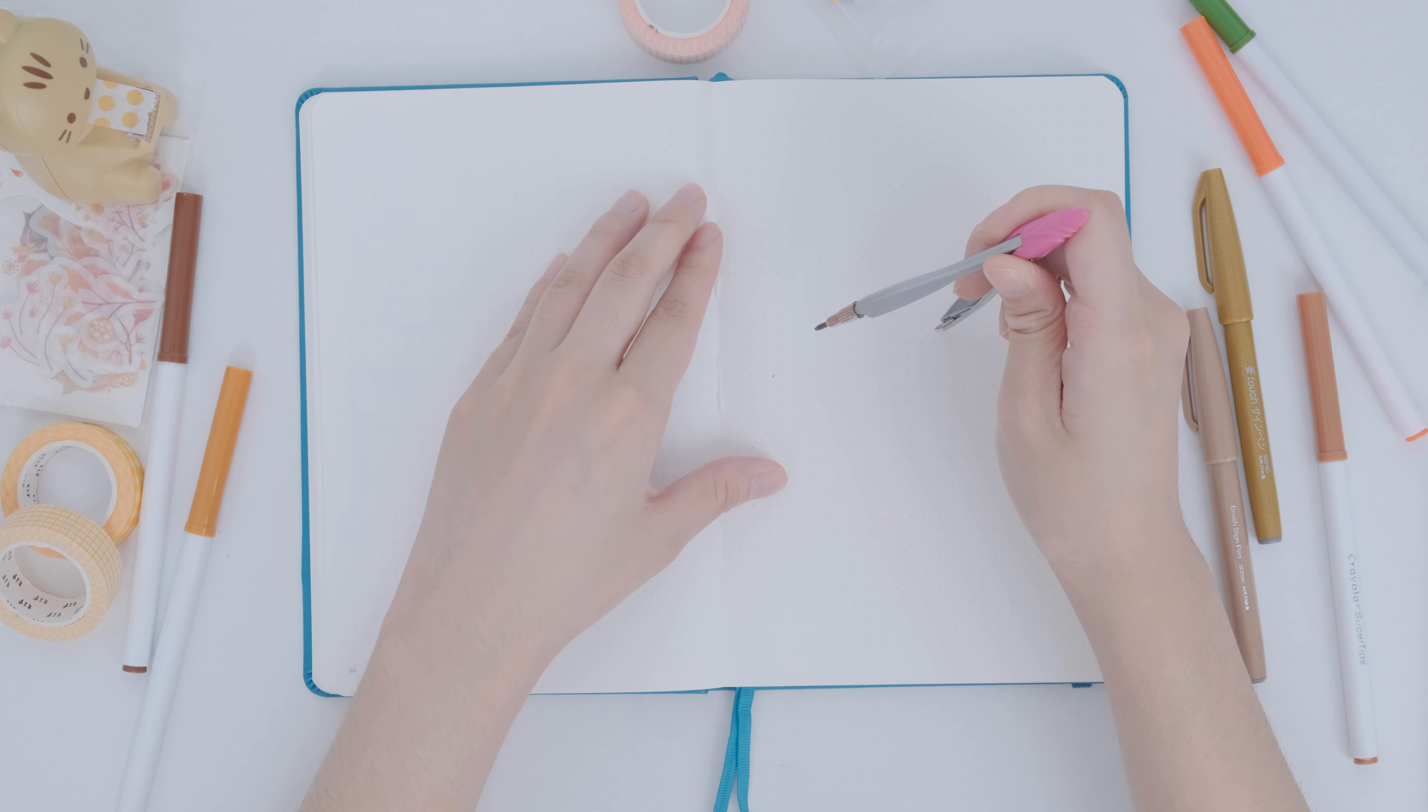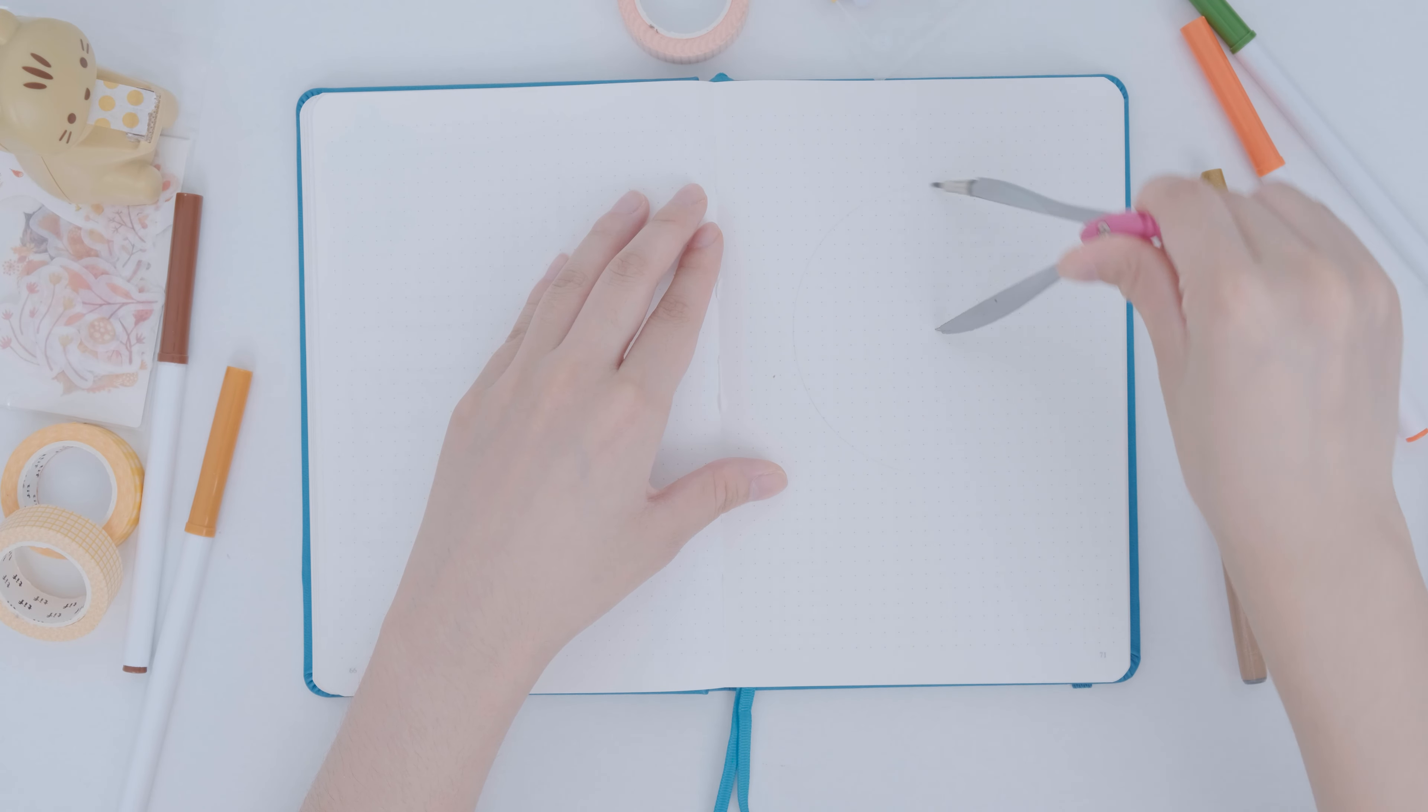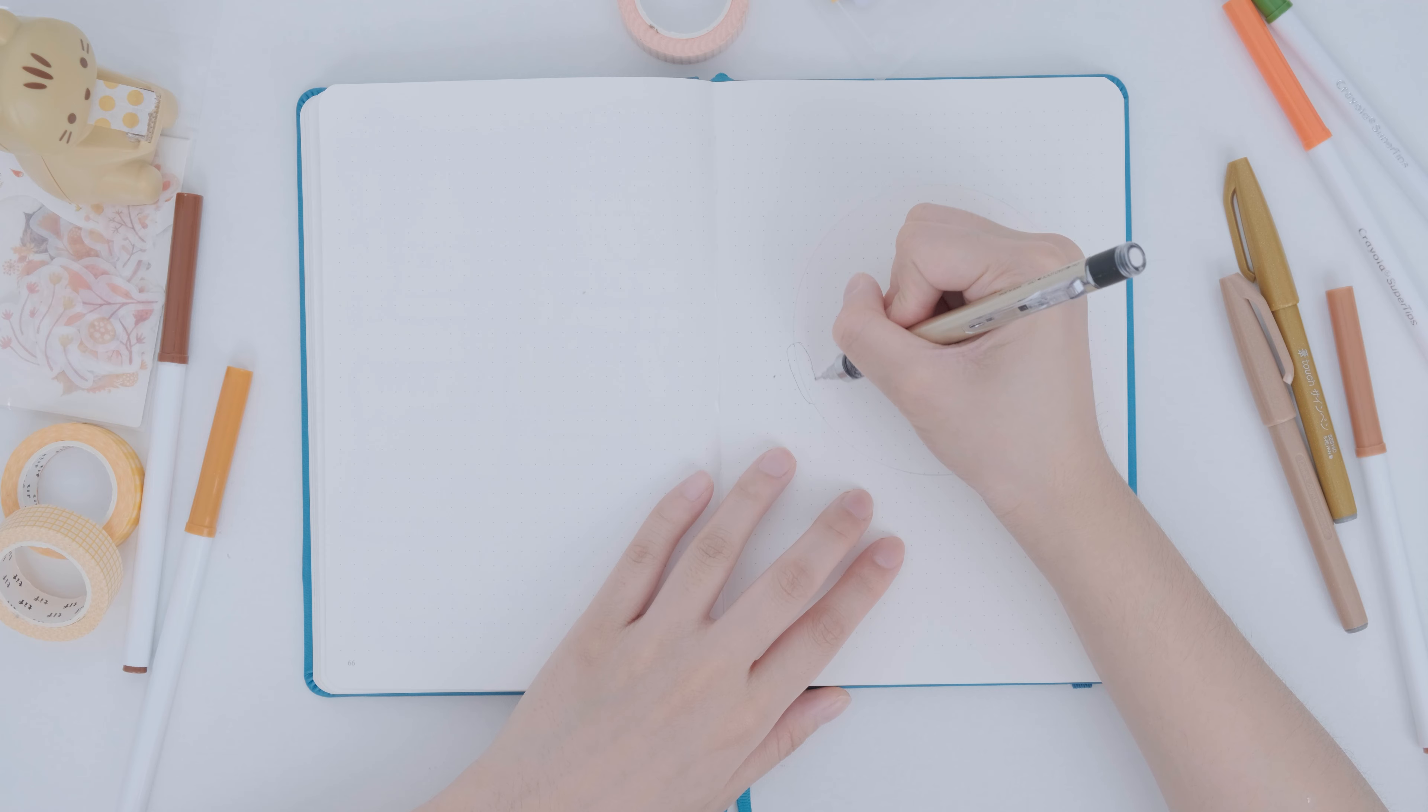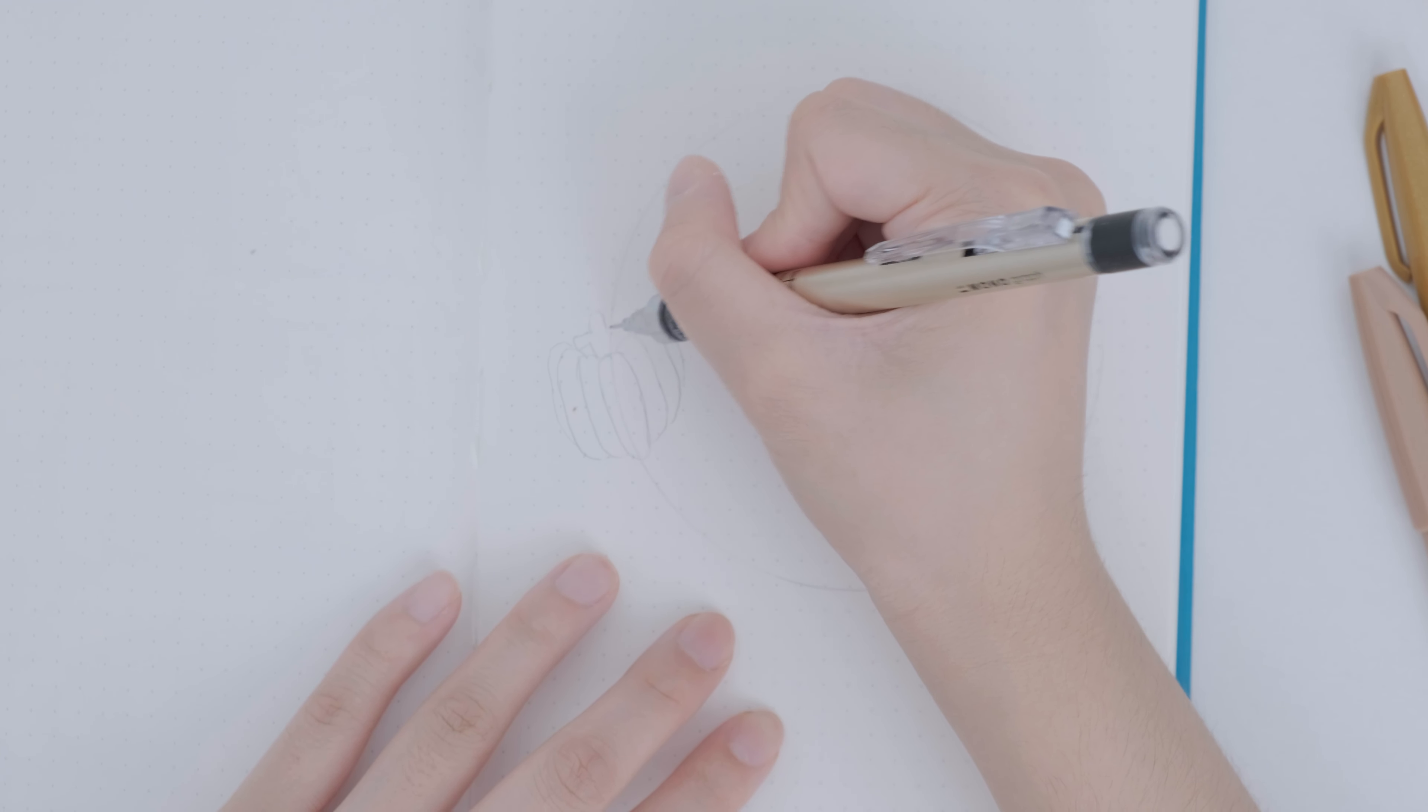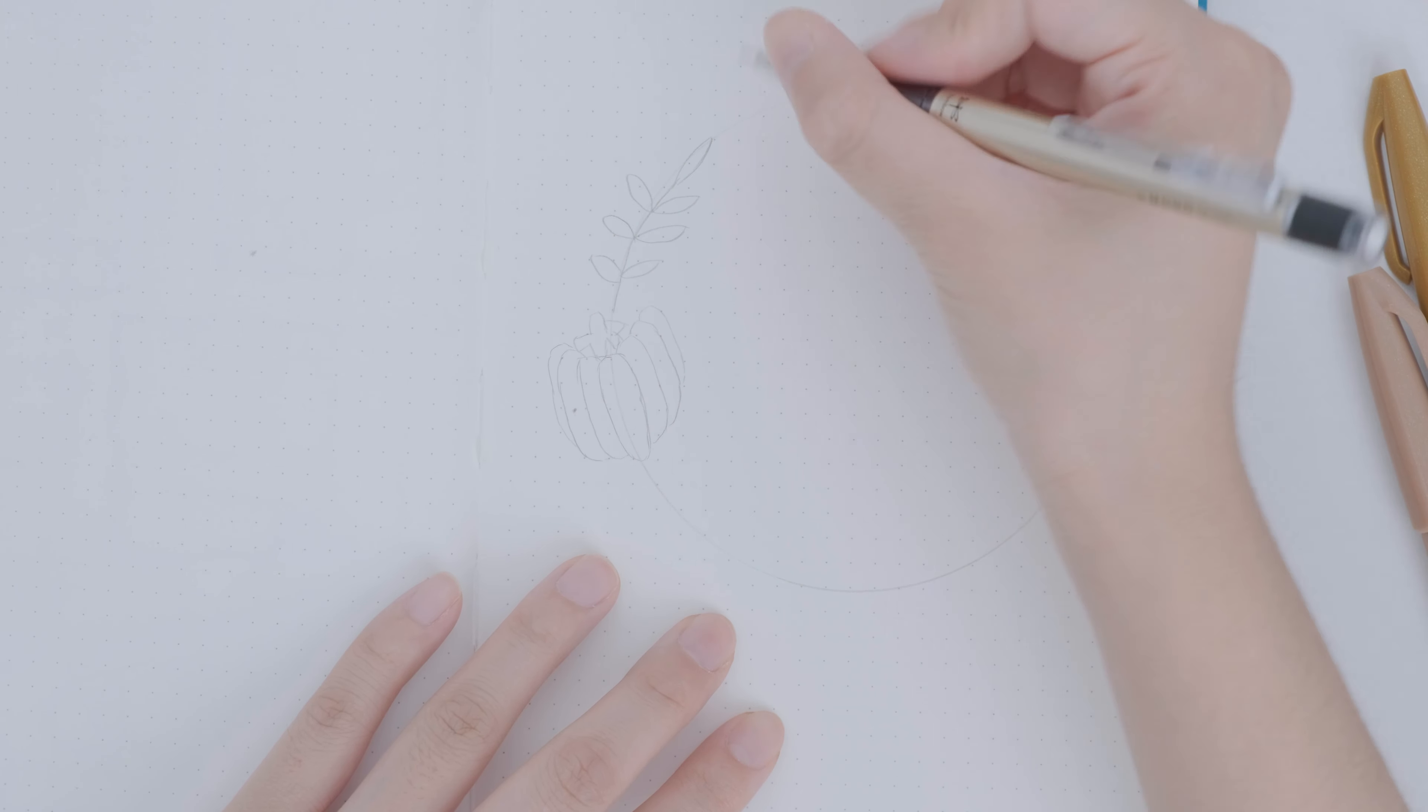I chose to use a simple wreath design for the cover. First, you can draw a circle with any round object. I used a compass, which is very easy to draw. Along the lines of the circles, I then drew various items related to autumn. I chose pumpkins, mushrooms, maple leaves, grains, and little bees, mainly because they are quite representative of the feeling of autumn.